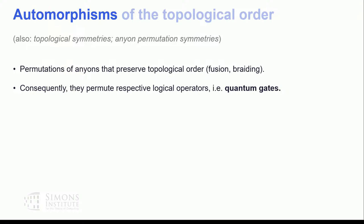Automorphisms of the topological order are topological symmetries — anyon permutation symmetries. These are ways to permute the labels of anyons and exchange them such that the mutual braiding algebra of anyon strings is preserved under this permutation. Because we permute anyons, we also permute respective logical operators generated by those anyons. Permuting logical operators means we have done a quantum gate — a logical operation. This is how automorphisms of the topological order for topological codes relate to logical operations on the respective quantum code.